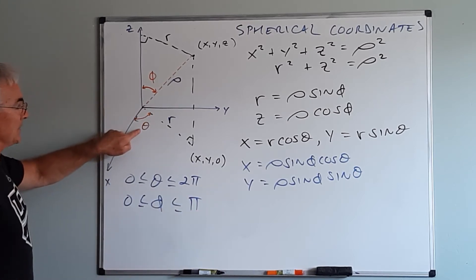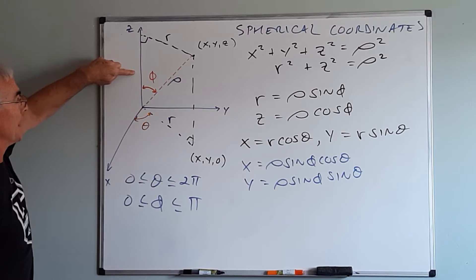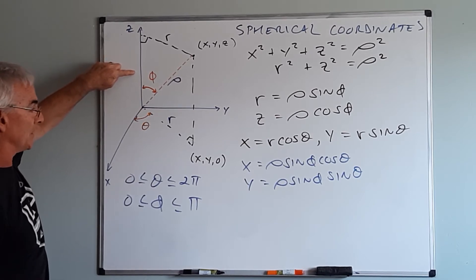Now again, theta lives on the xy plane, phi is the angle made with the z axis, so they're completely independent of each other.